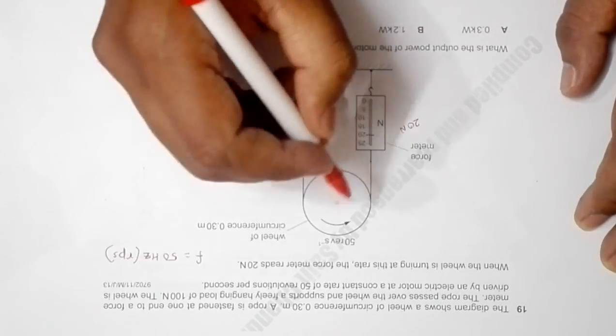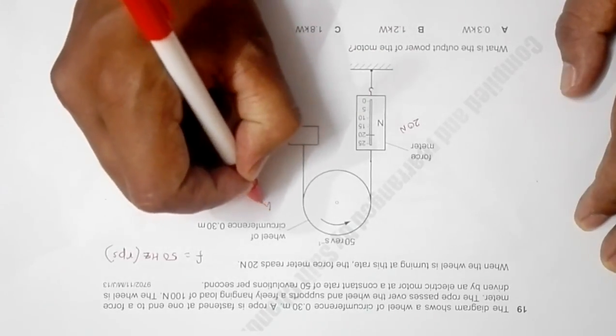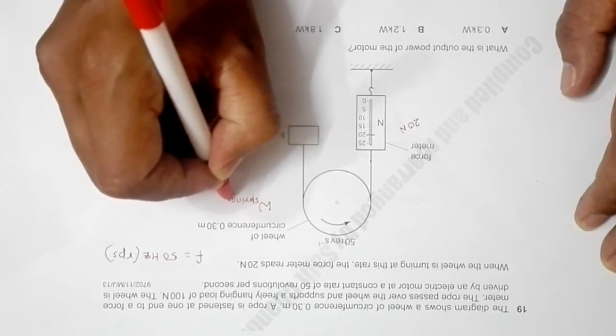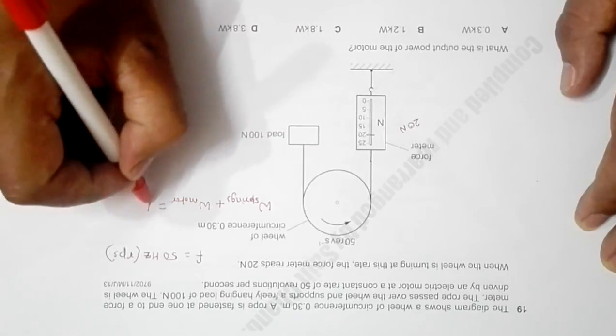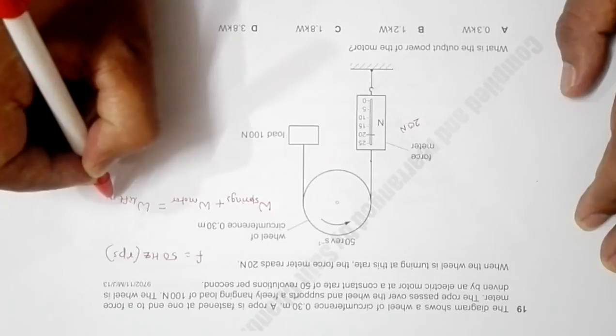Work done by springs plus work done by motor is equal to work required to lift the load.